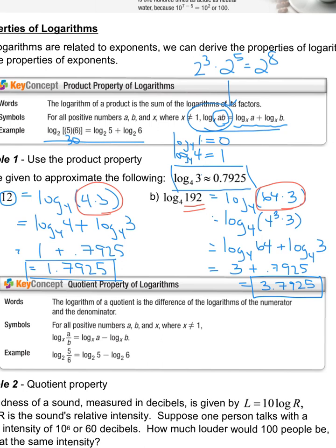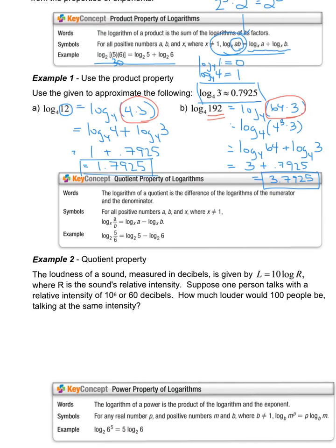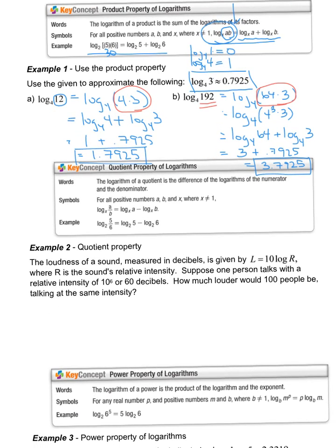So moving right along, we just explored the product property of log. So when we have two logs, our product, we're logging a product, we can add them together. If we have a quotient, very similar idea. We're going to subtract them. And that's what's given to you in the box, the general form. If I'm logging a quotient, I'm going to subtract the two.